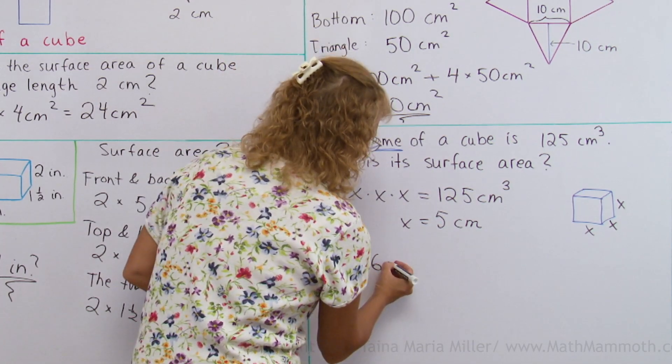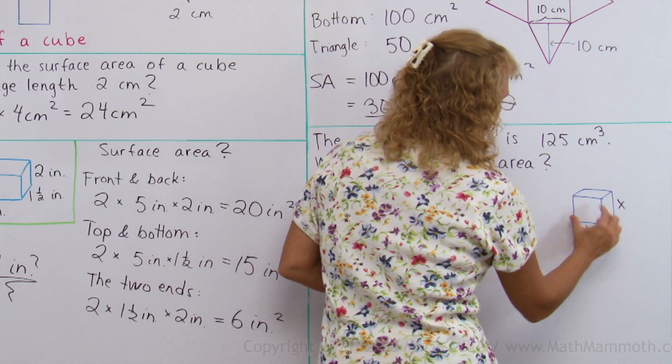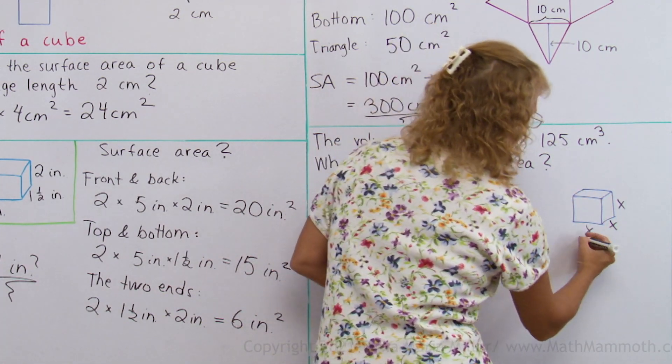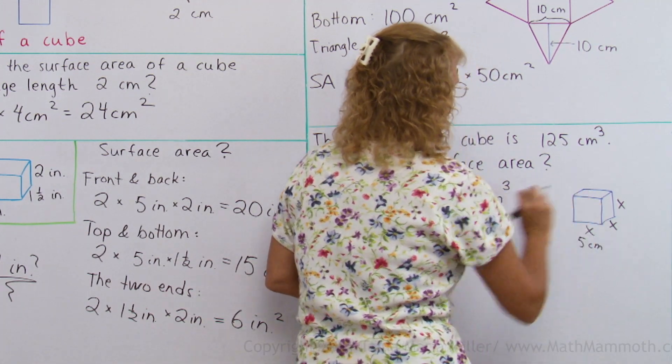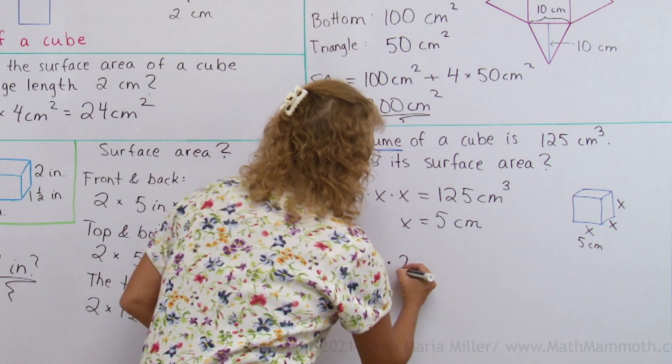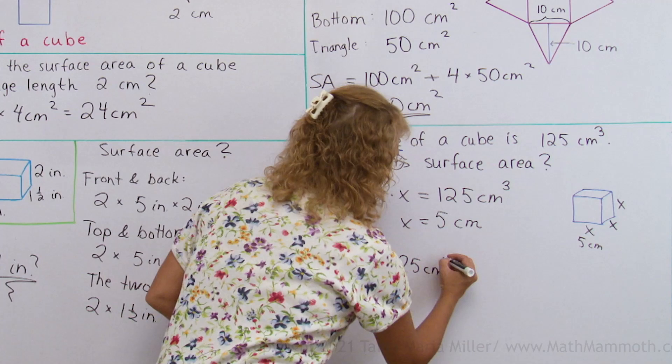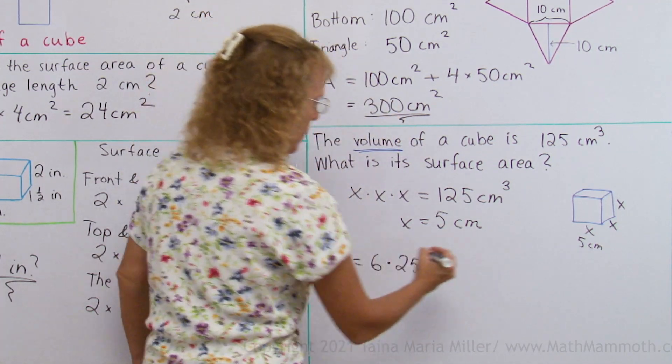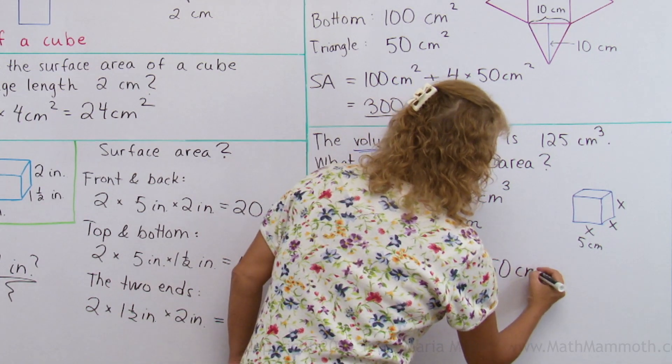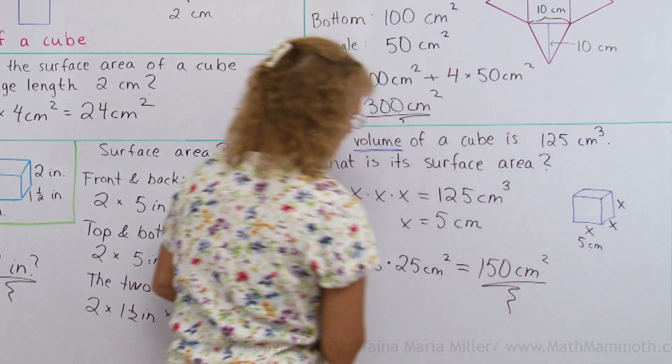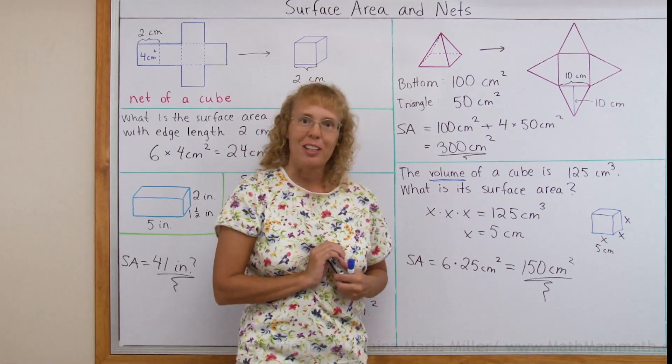I'm going to change this. Let's put the raised dot here this time, 6 times. And the area of one of these, it's 5 centimeters now here, 5 centimeters times 5 centimeters. That's 25 square centimeters, right? And so we get 150 square centimeters for the surface area. We're all done with this lesson.